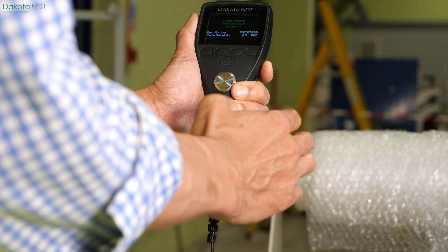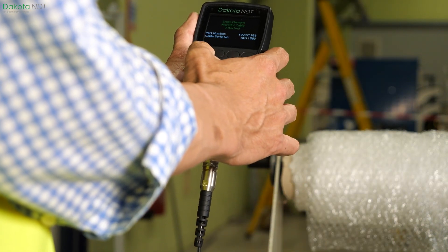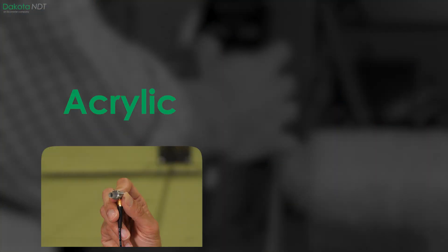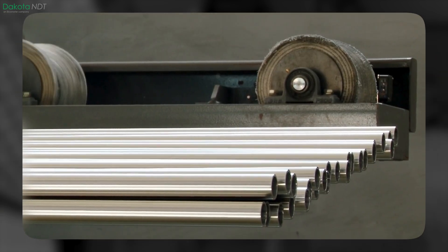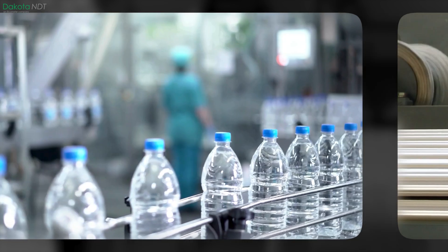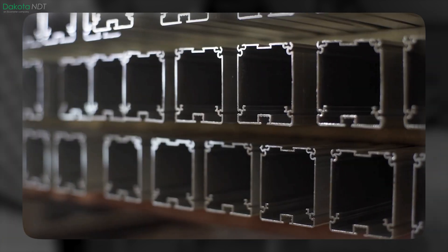Dakota NDT supply two different materials of delay line, acrylic and graphite. The material you are measuring will affect the material of the delay line you should use.